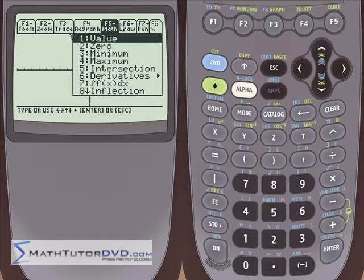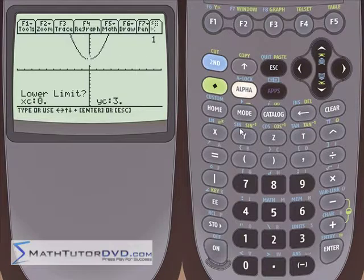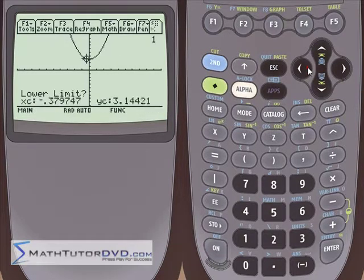So we go into the math menu here, F5, and we just did derivative. So just under that is integral f of x dx. That's what this symbology means here. So we go to number seven.